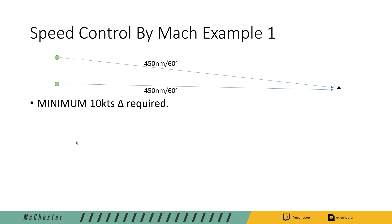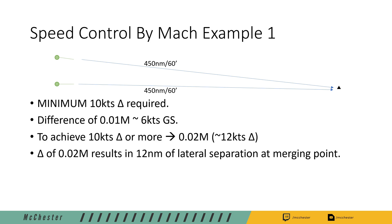So with the 10 knots of delta required, we think about the rules of thumb that we had before which say that 0.01 Mach equals a ground speed difference of 6 knots. So we need 0.02 Mach which equals that delta speed of 12 knots approximately. So with a delta of 0.02 Mach we will have not 10 but 12 nautical miles at the merging point which is more than sufficient.